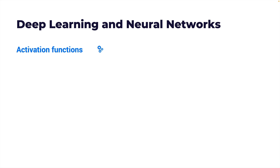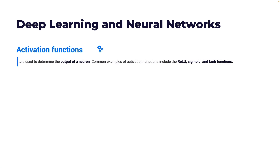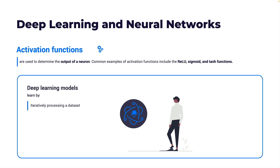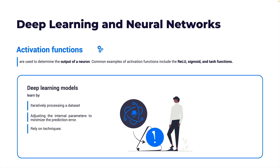Activation functions are used to determine the output of a neuron. Examples include ReLU, sigmoid, and tanh functions. Deep learning models learn by iteratively processing a dataset and adjusting internal parameters to minimize the prediction error. They rely on techniques called forward propagation and backward propagation to learn from the input data.